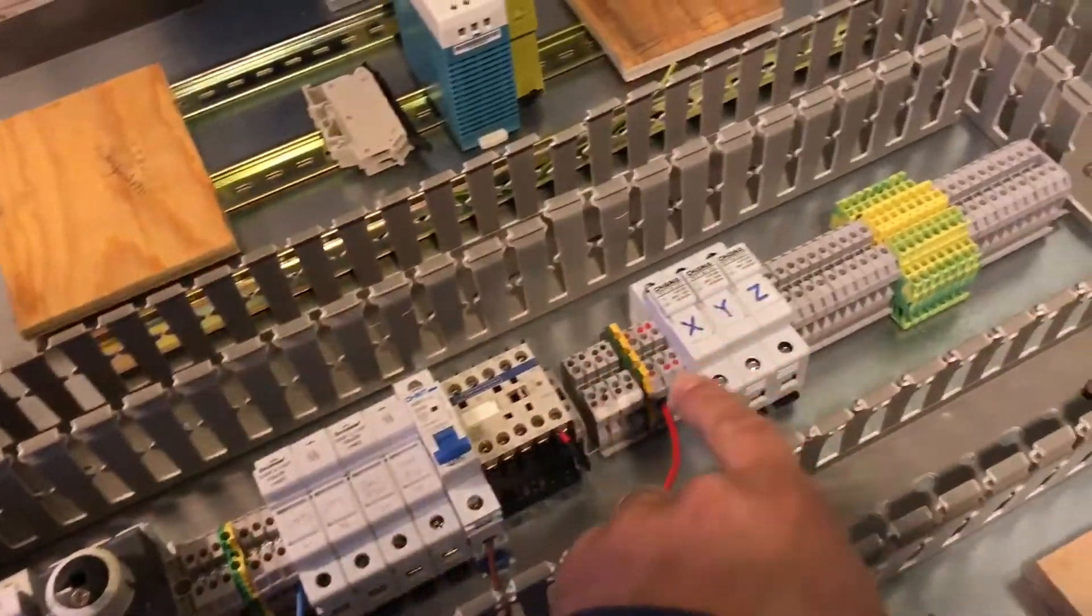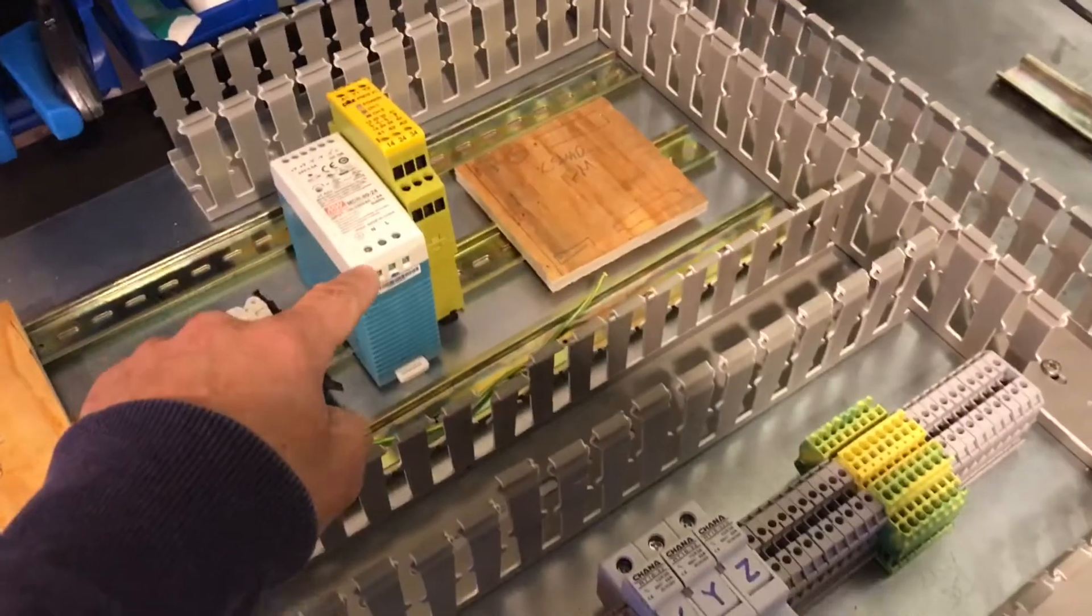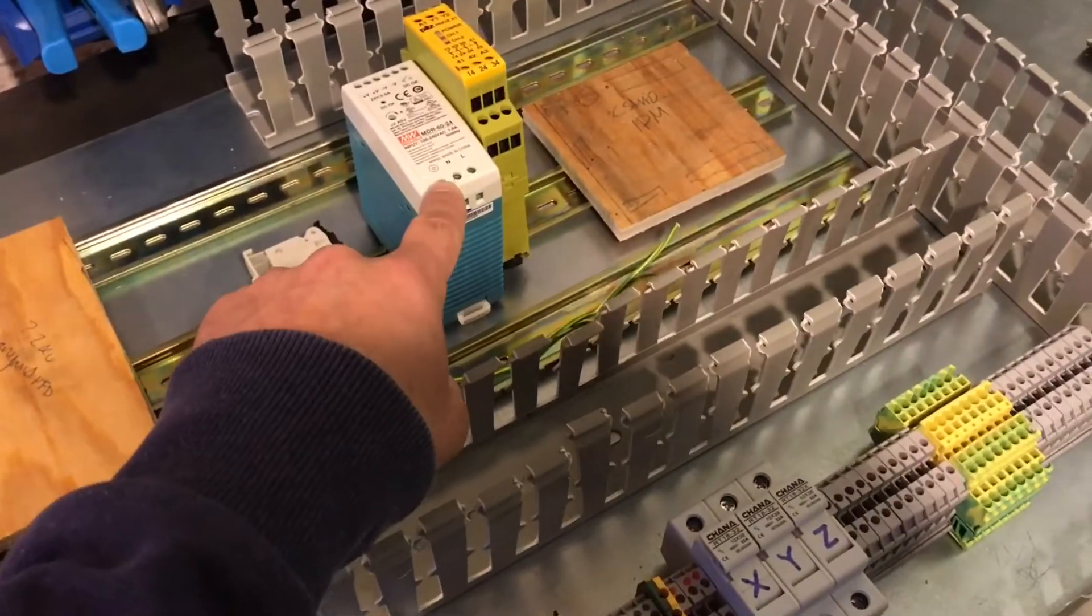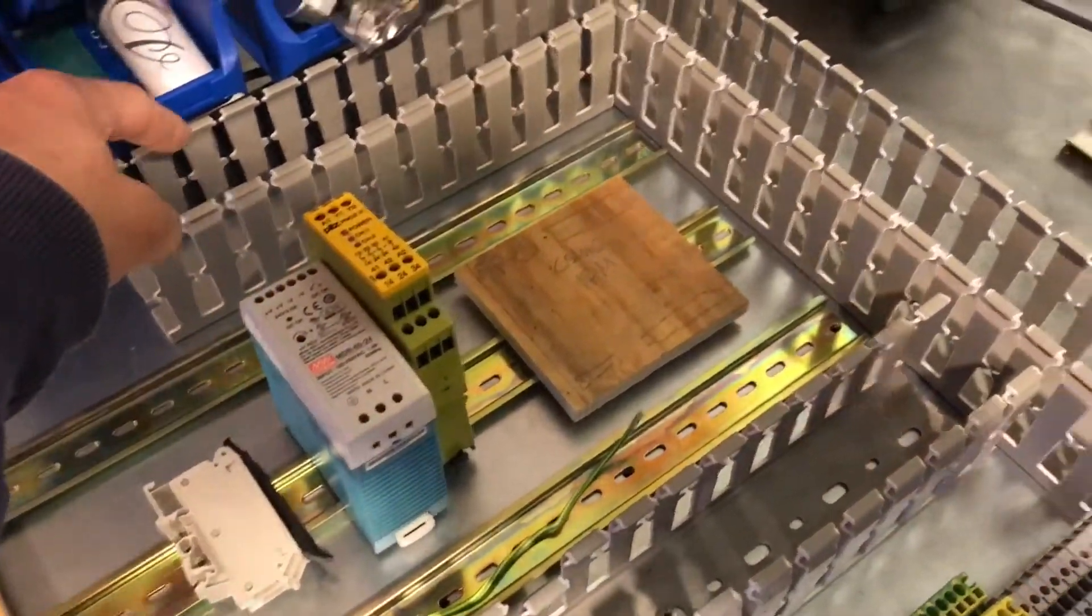And the 24 volt, to keep it all separate, is going to be mains up and into the bottom of the 24 volt power supply, and then out of the top round and then into here. And you've got the positive, negative, and star ground.